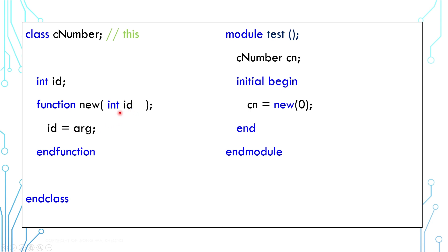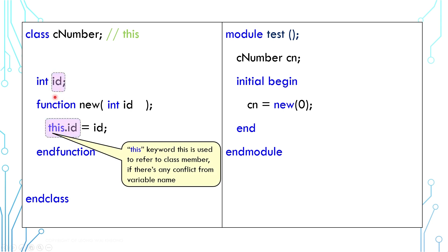The answer is yes, we can. But if we do that, how do we differentiate between this id and that id? The answer is literally this. By using the keyword this, this.id refers to the class member id and this id refers to the function argument id.